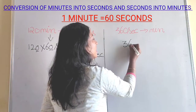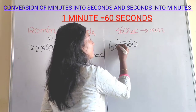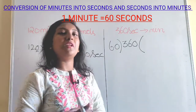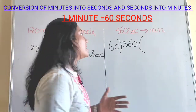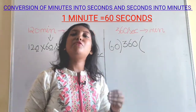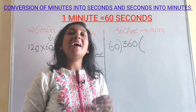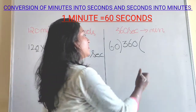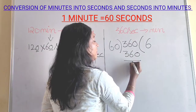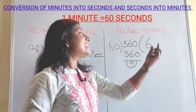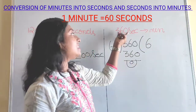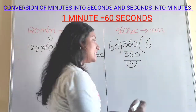Take 360 and divide it by 60. We'll see both methods — use whichever you feel comfortable with. Counting up: 60, 120, 180, 240, 300, 360 — so 60 goes into 360 six times. We got our answer: 6. Whatever we get in the quotient is your answer. We have converted 360 seconds to 6 minutes.